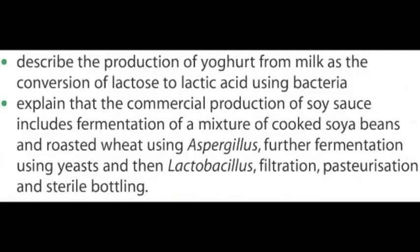Lesson number two: making yogurt and soy sauce. By the end of this lesson you should be able to describe the production of yogurt from milk as the conversion of lactose to lactic acid using bacteria, and explain that the commercial production of soy sauce includes fermentation of a mixture of cooked soybeans and roasted wheat using Aspergillus, further fermentation using yeasts and then Lactobacillus, filtration, pasteurization, and sterile bottling.